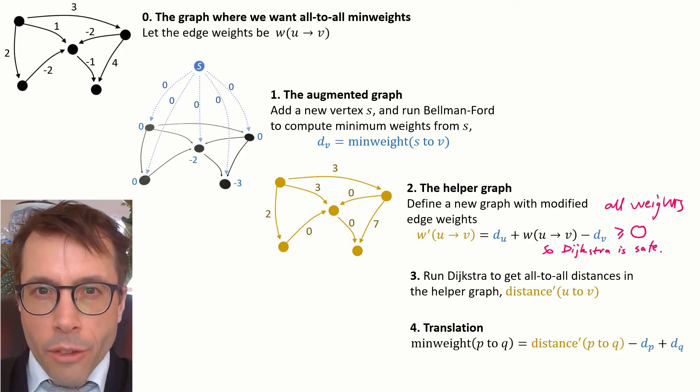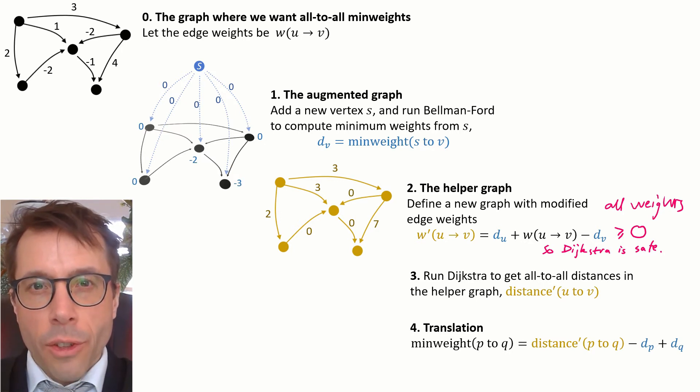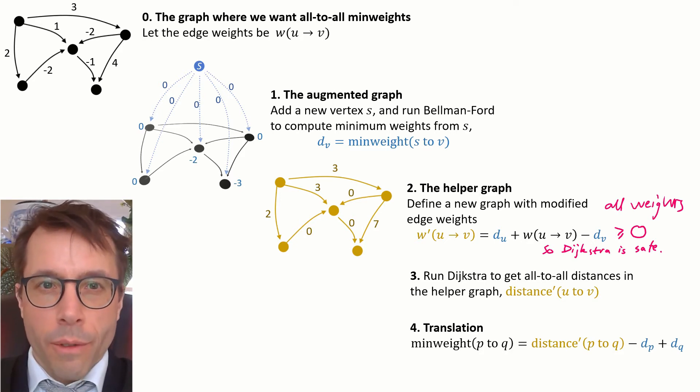First comment: in this helper graph that we designed in step two, all the edge weights turn out to be above or equal to zero. That's pretty easy to show and we'll show it in a moment. But what it means is that step three is safe. Dijkstra's algorithm won't get stuck in an infinite loop.